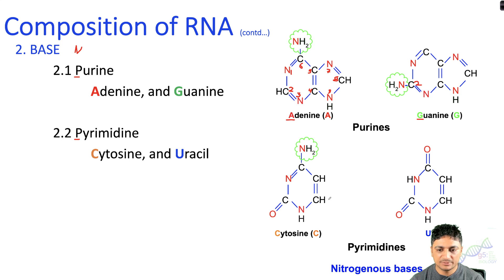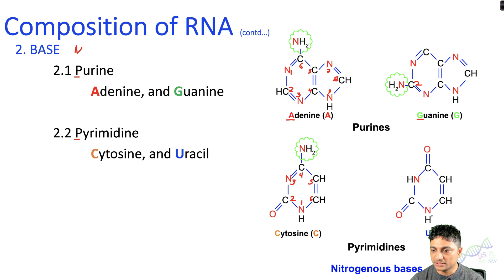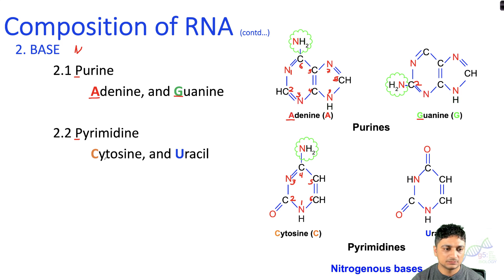The pyrimidine base is a single ring structure with six members. Cytosine has an amine group at the fourth carbon position. In uracil, however, there is no methyl group or amine group at that position.